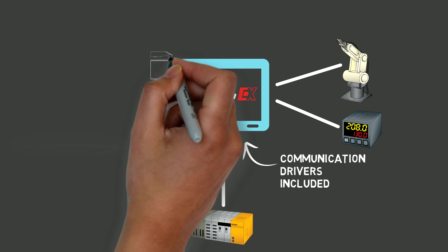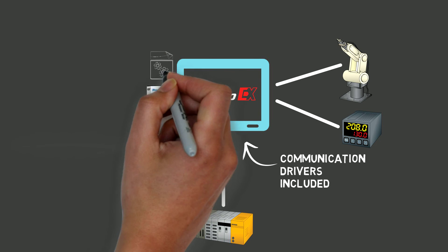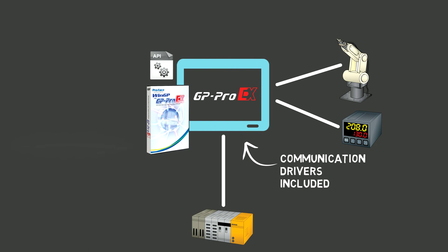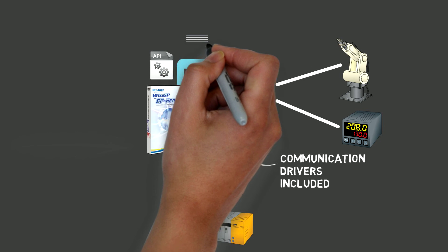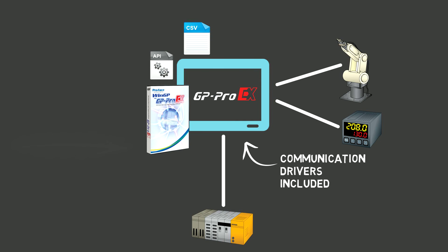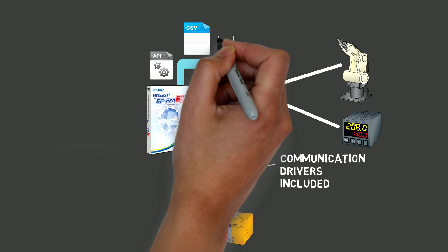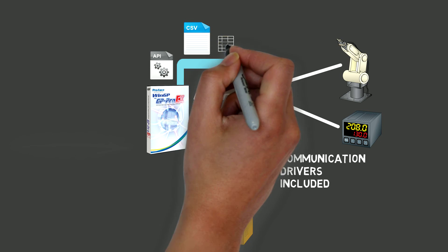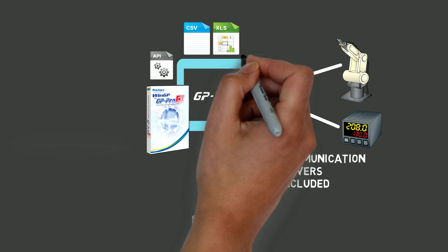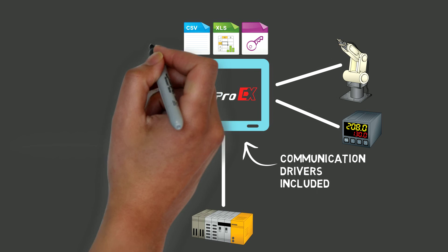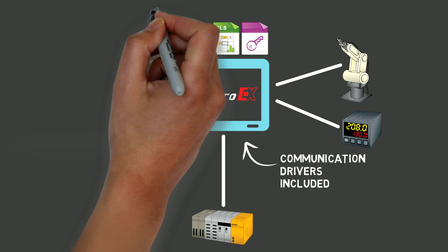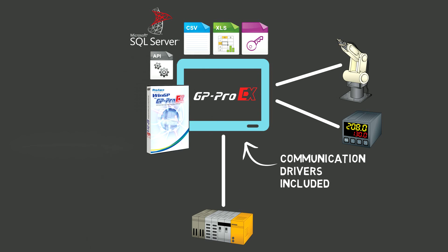Communication between WinGP and user applications is also possible. A dedicated API enables a user application to receive WinGP status, change its setup, and read or write to control devices connected with WinGP.